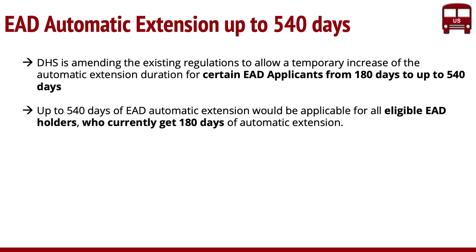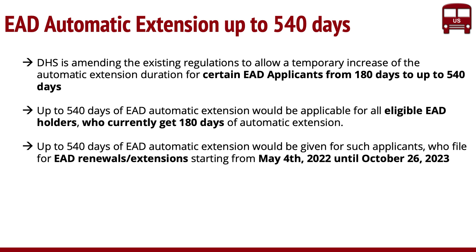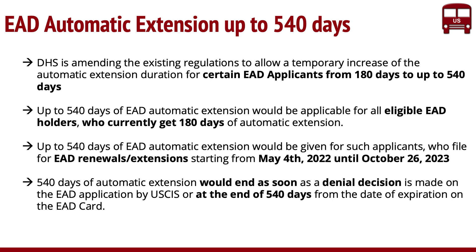It's not applicable to anyone who has an EAD at all — only to eligible EAD applicants. These 540 days will be given to applicants who file EAD renewals starting from May 4th, which is today, all the way until October 26, 2023 — basically for the next one and a half years. This 540-day automatic extension will end when there is a decision on your case — meaning if USCIS denies your EAD, or at the end of 540 days if no decision is made.